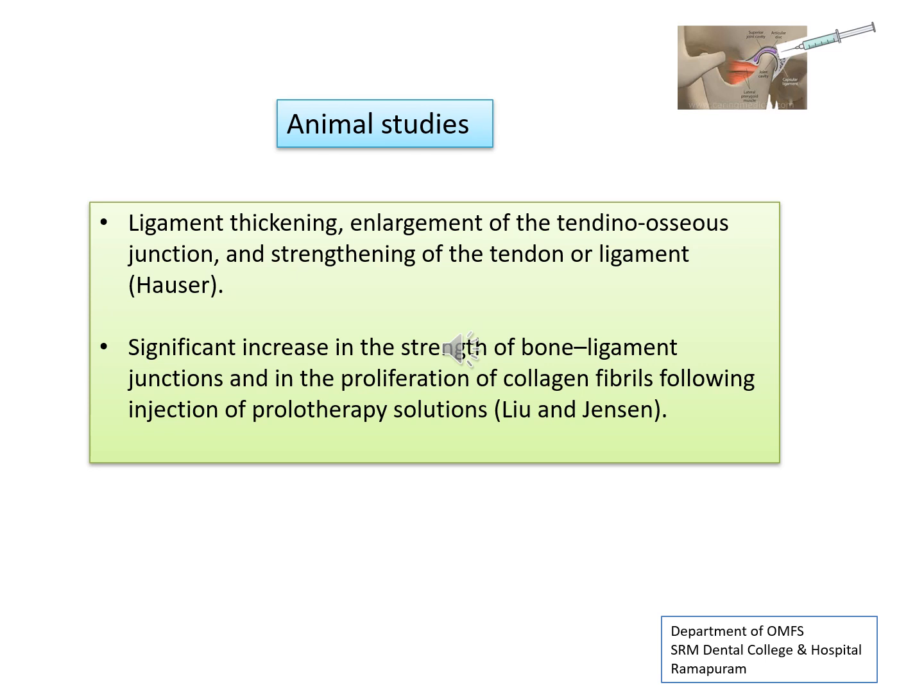Imaging studies using prolotherapy have demonstrated ligament thickening, enlargement of the tendinous osseous junction, and strengthening of the tendon or ligament. Another study showed a significant increase in the strength of bone-ligament junctions and in the proliferation of collagen fibrils following injection of prolotherapy solution.